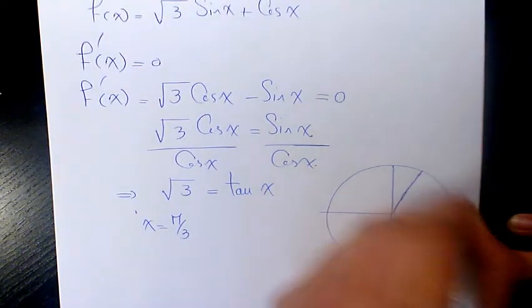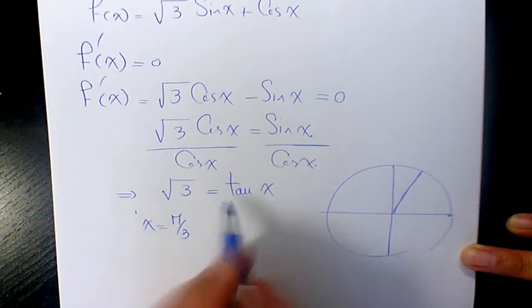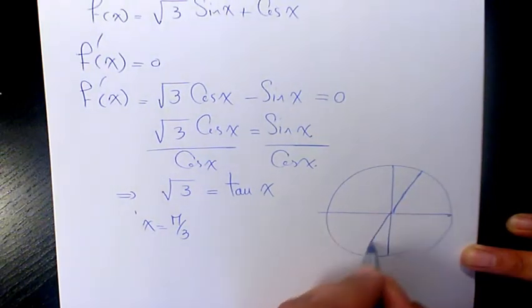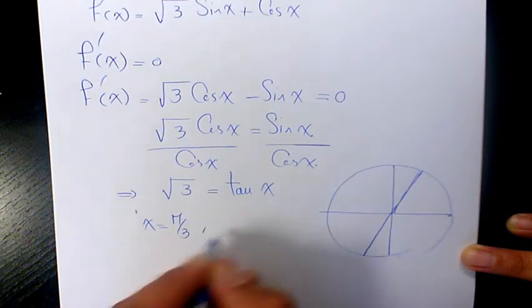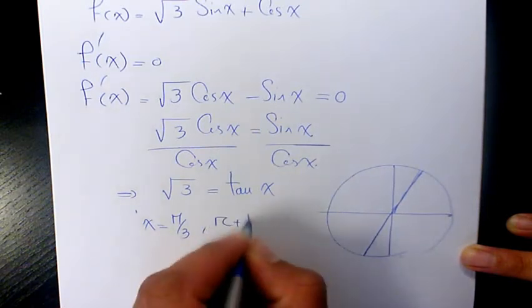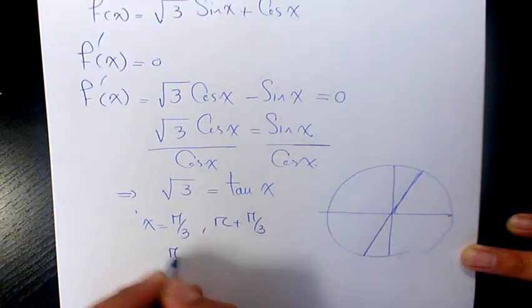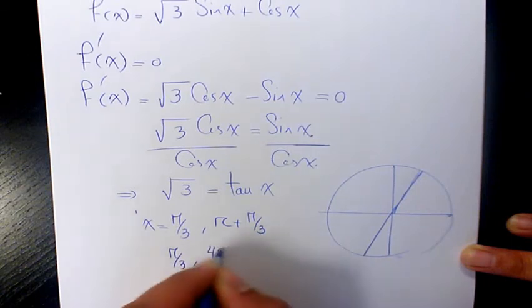because tan is positive in quadrant 1 and quadrant 3 as well. So it's going to be π/3 and π + π/3, which gives us π/3 and 4π/3.